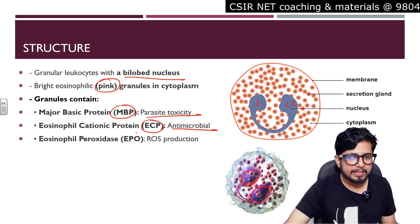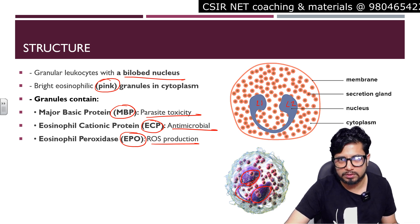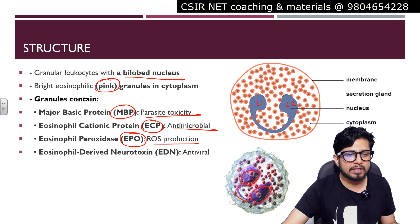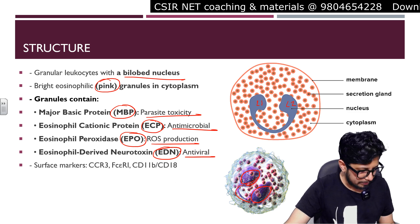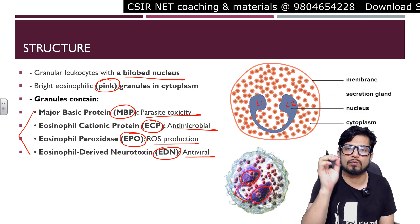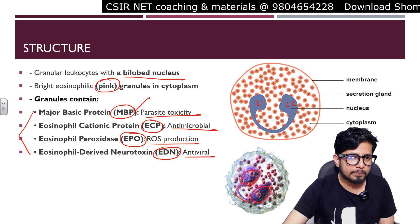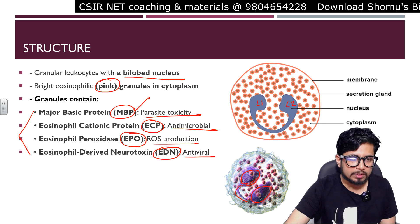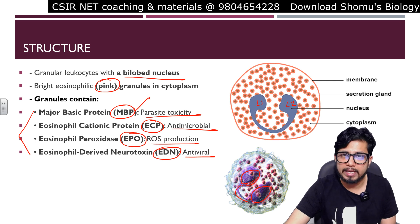Eosinophil peroxidase, EPO, is involved in reactive oxygen species (ROS) production. Eosinophil-derived neurotoxin, EDN, has antiviral properties. So among the granules there are four categories: MBP (major basic protein), ECP (eosinophil cationic protein), EPO (eosinophil peroxidase), and EDN (eosinophil-derived neurotoxin). These are four different kinds of granules present in eosinophils.